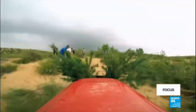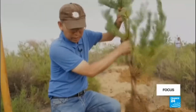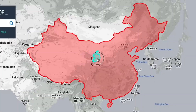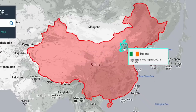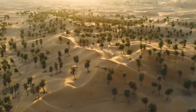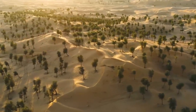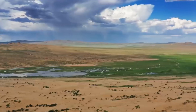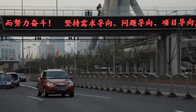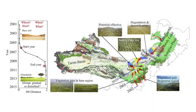Over the past 45 years, China has made remarkable strides in this endeavor. Each year, the country plants trees across an area nearly equivalent to the size of Ireland. Whereas in the early 2000s the desert expanded by approximately 10,000 square kilometers annually, China is now gaining ground in the battle against desertification, reclaiming over 2,000 square kilometers of desert each year.